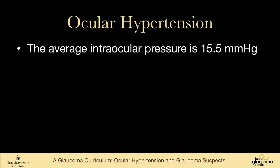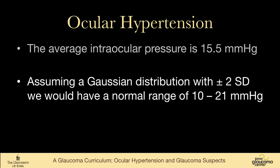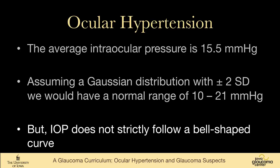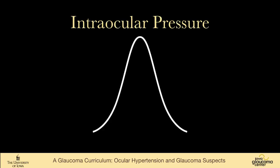The average intraocular pressure is around 16 millimeters of mercury, 15 and a half. And if one assumes a Gaussian or bell-shaped distribution with plus or minus two standard deviations, we would have a normal pressure range of 10 to 21 millimeters of mercury. But intraocular pressure does not strictly follow a bell-shaped curve.